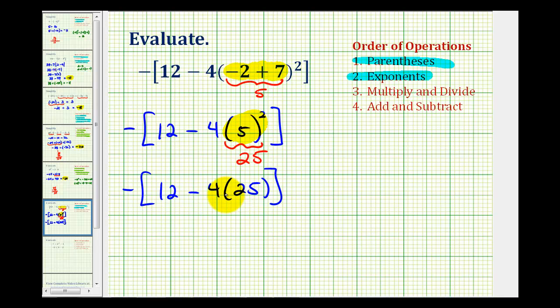So notice how we have multiplication here and we also have subtraction. But notice how multiplication takes priority over the subtraction. So the next step is to determine this product here. Well positive 4 times positive 25 is equal to 100.